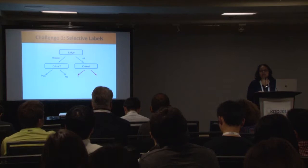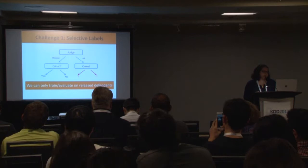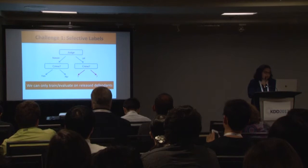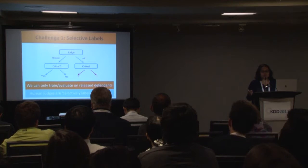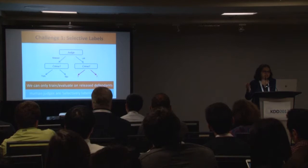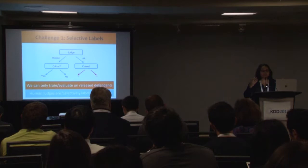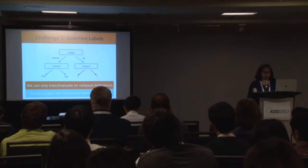We can only train and evaluate on released defendants. The key point is that human judges are selectively labeling these data — we have labels only for certain defendants who have been released by the judges. That is what we call the selective labeling problem.